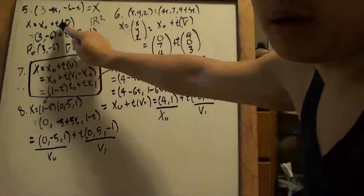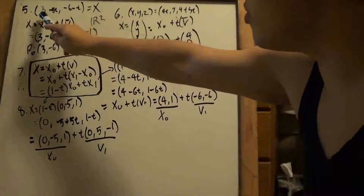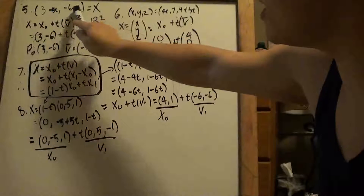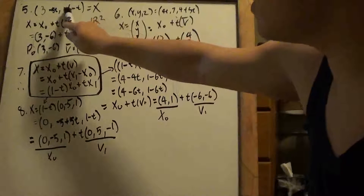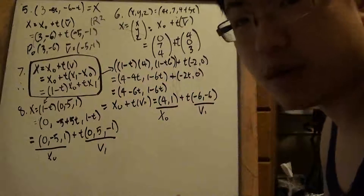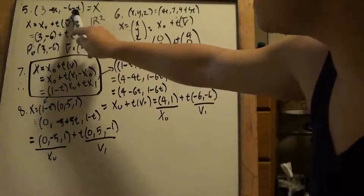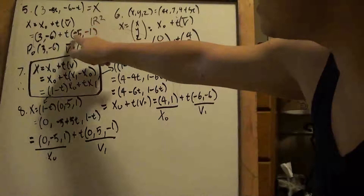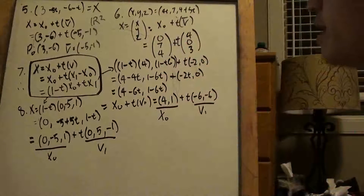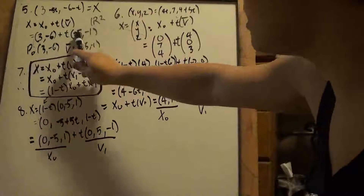Remember the general equation X = X0 + tV. Because of that, you can tell that the vector components are associated with the parameter t. Anything that has t is involved with the vector. So 3 and negative 6 — they have no t — so they'll correlate with the point rather than the vector. So 3 and negative 6 go to the point, and negative 5t goes to the vector. I keep the sign consistent — if it's negative t, that means you have a negative number.